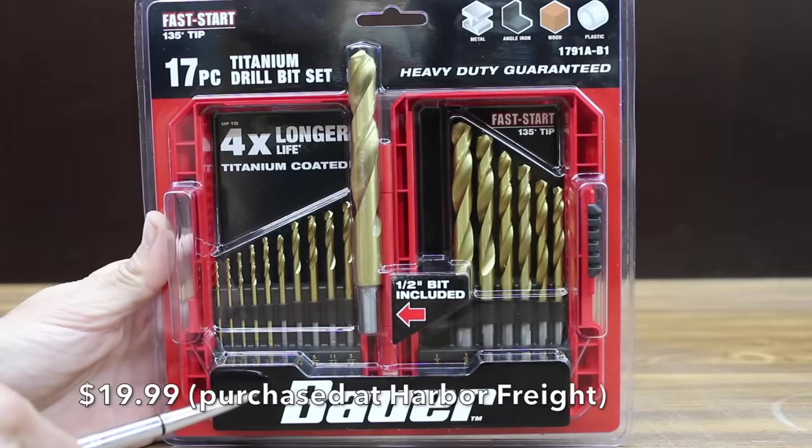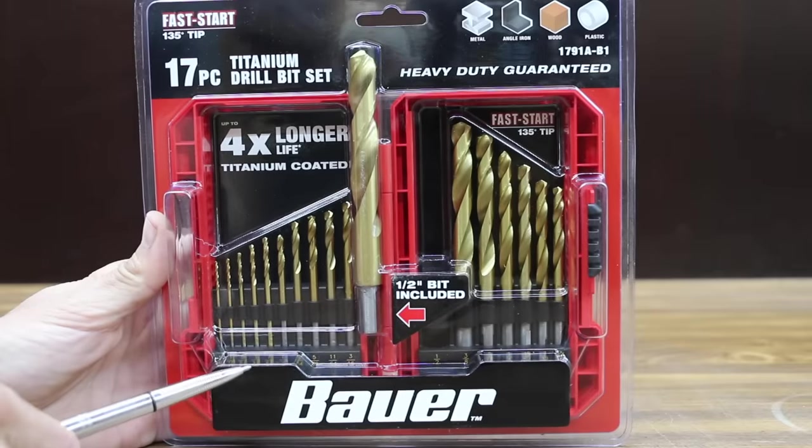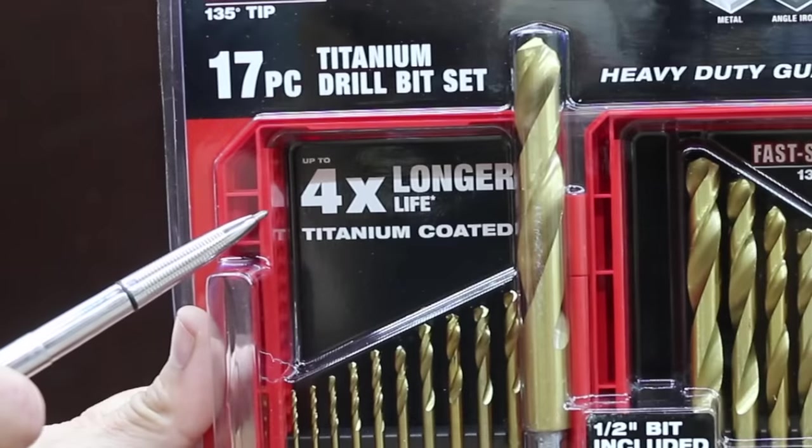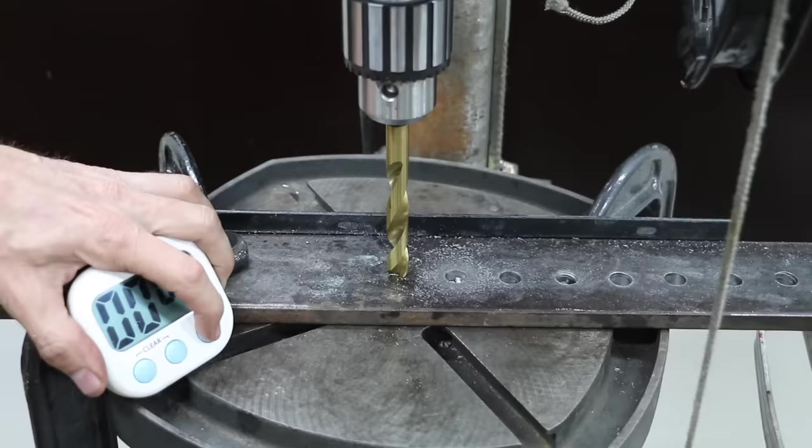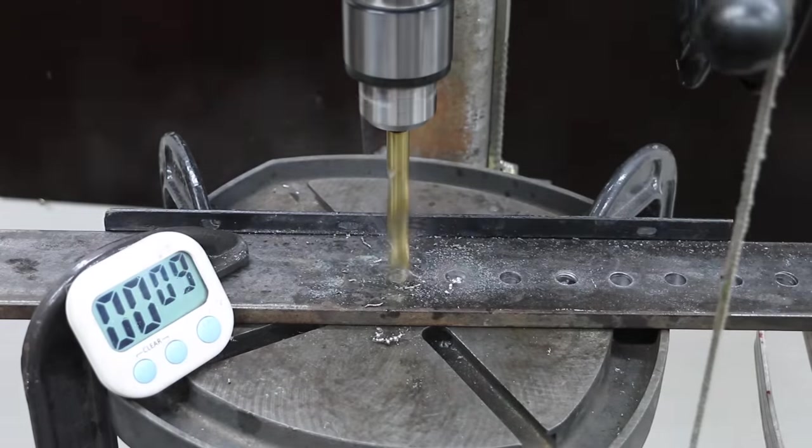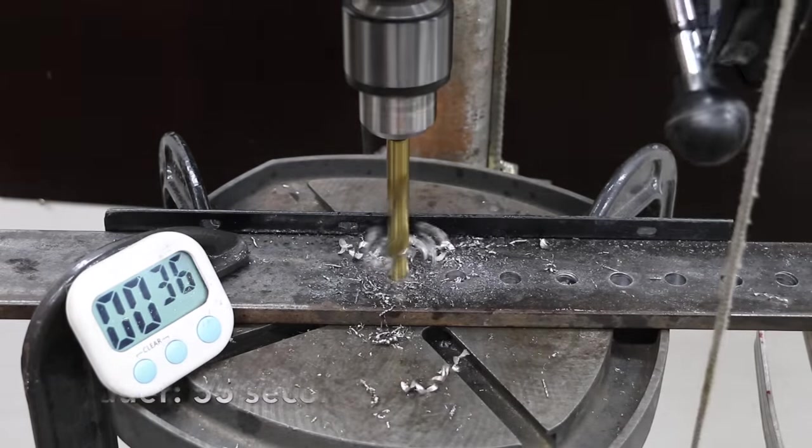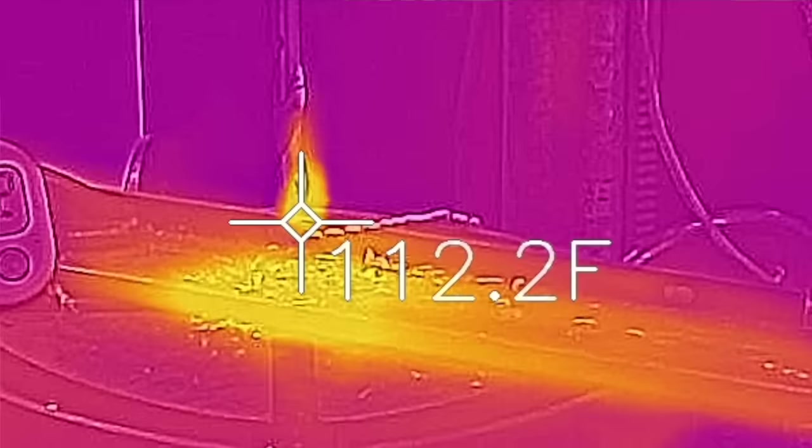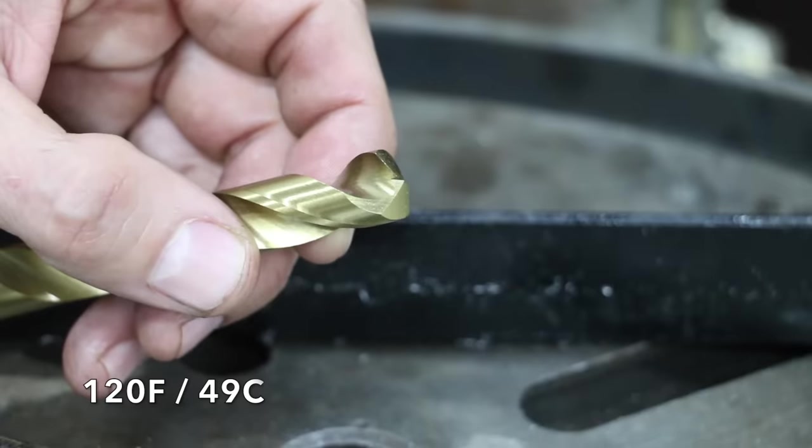Costing $19.99, also sold at Harbor Freight is this Bauer brand 17-piece Titanium drill bit set. 4 times longer life, titanium coated. 55 seconds, 120 degrees Fahrenheit. The barrel looks as good as new.